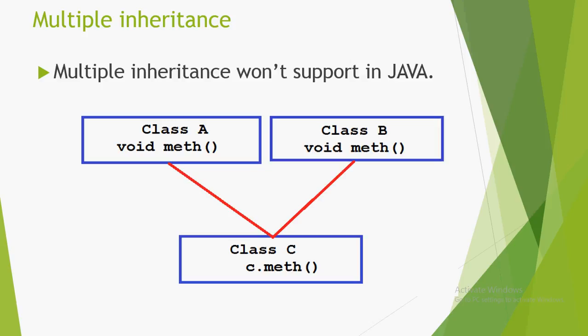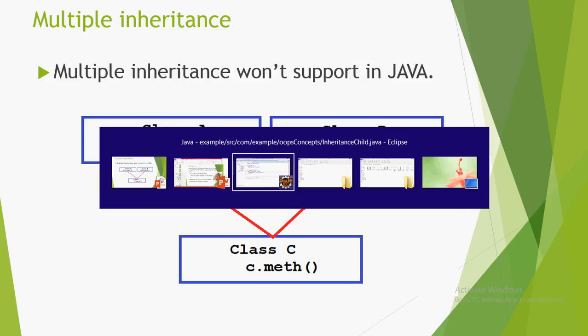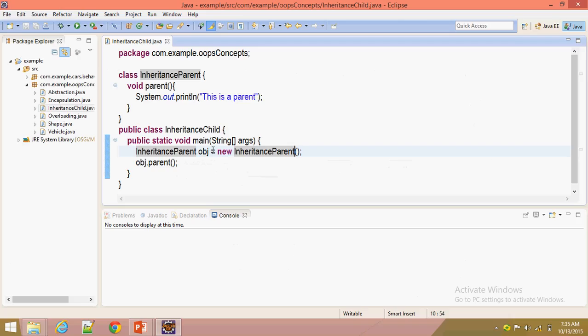With interfaces, if we implement two interfaces that have the same method, the Java compiler won't get confused because there is no implementation in the interfaces. We will see why Java won't support multiple inheritance in classes, with an example. If we extend another class, the Java compiler will get confused as to which implementation to take.